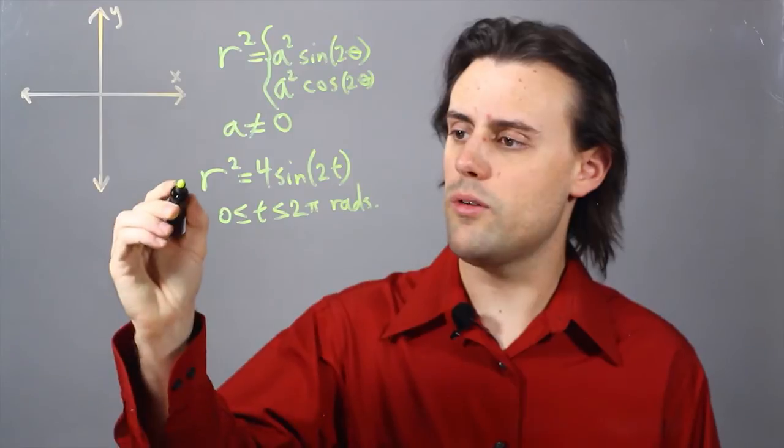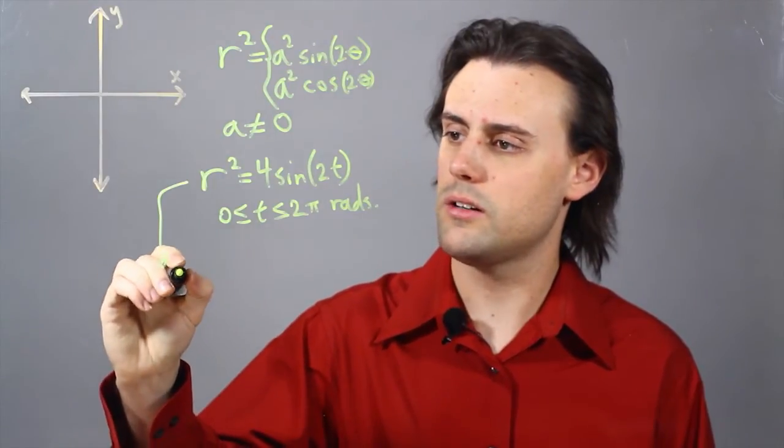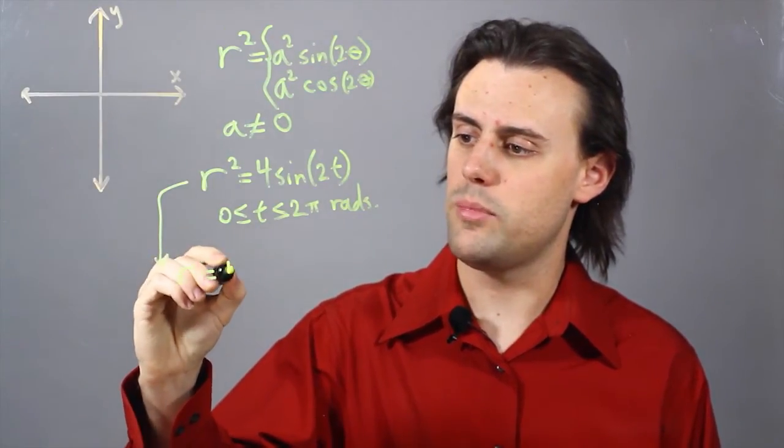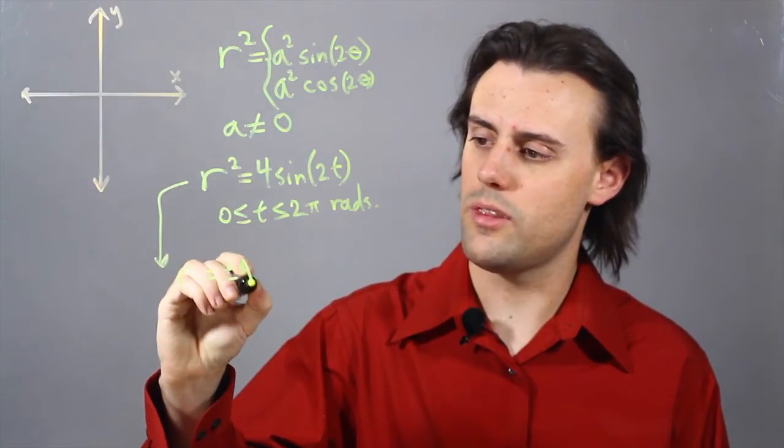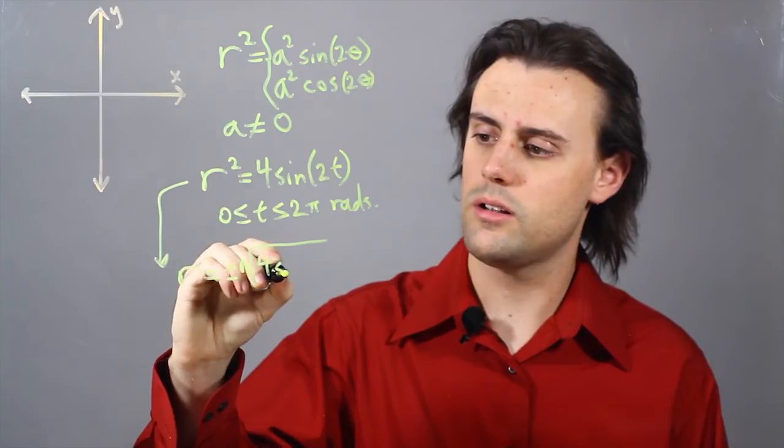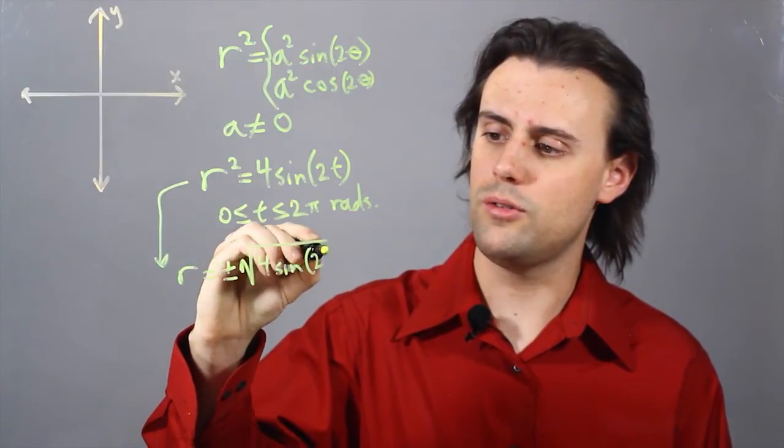And when we solve this equation for r, we get plus minus, because of the even power, the square root of 4 times sine of 2t.